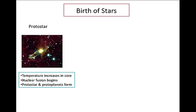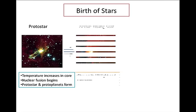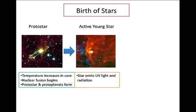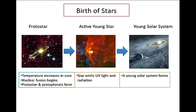The birth of stars. As temperature increases in the core and nuclear fusion begins in a molecular cloud, a protostar is formed. Once the star emits UV light and radiation, it has become an active young star. Finally, around that star, a solar system of planets and other celestial bodies is formed.